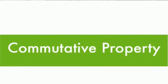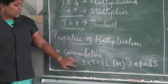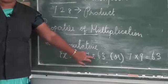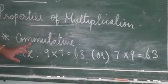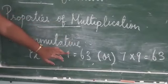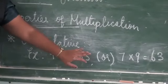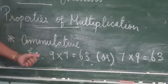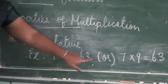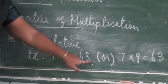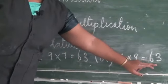Commutative property: if you multiply two numbers, for example 9 × 7 = 63, the order changes but the product will not change. That is called the commutative property. Nine into seven equals 63, and seven into nine also equals 63.